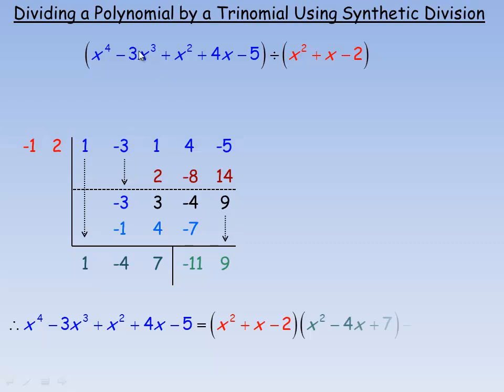So we divided this polynomial by x squared plus x minus 2. And so the answer is, the 1, negative 4, 7 means x squared minus 4x plus 7. And the remainder is negative 11x plus 9.